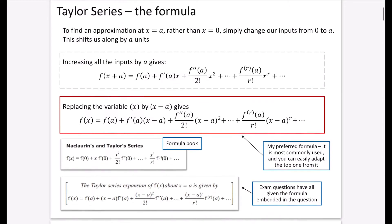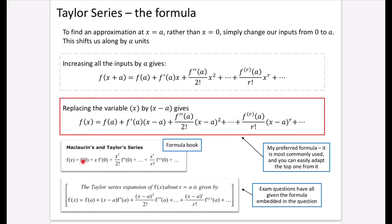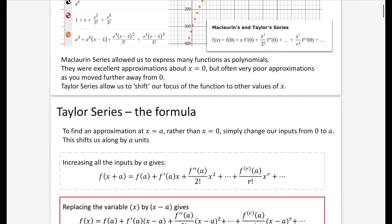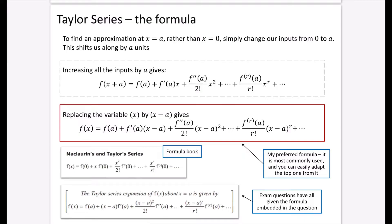The Taylor series formula is pretty similar to the McLaurin. With McLaurin, you substitute zero into the different derivatives and divide by the factorial, giving powers of x. For Taylor, we find an approximation at x equals a — in our earlier example, a was four. We change all inputs from zero to a, shifting our focus from zero to a, giving powers of x minus a. I've put one version in a gray dashed box and the preferred version in a red box.